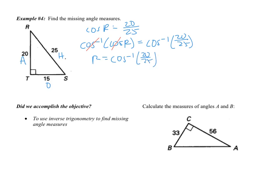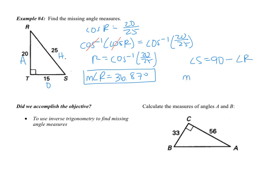So we get angle R equals the inverse cosine of 20 over 25. Going to the calculator, we're going to hit second cosine of 20 divided by 25, and we get the measure of angle R equals 36.87 degrees. Then to find angle S, all I'm going to do is take 90 and subtract angle R, so I get the measure of angle S to be 53.13 degrees.